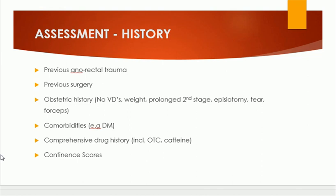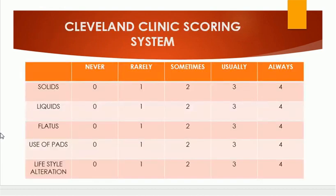There are a number of continence scoring systems available. One is the Cleveland Clinic Scoring System. The criteria in this scoring system are: solids, liquids, flatus, use of pads, and lifestyle alteration. These are the criteria used to score incontinence, with grades 0 to 4. The Cleveland Clinic Scoring System is one well-known way to score fecal incontinence.